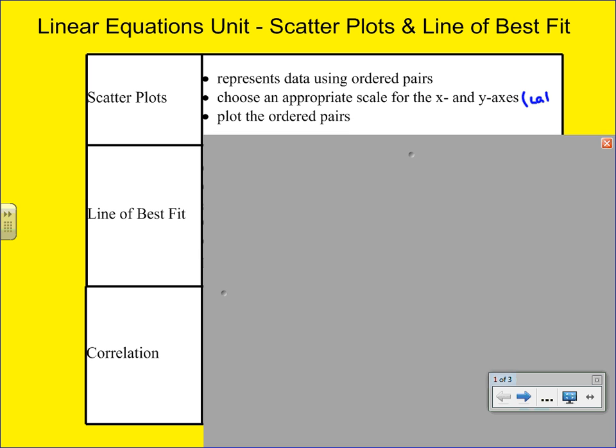And what you're going to notice is that you'll have ordered pairs all around the graph. They're not necessarily going to form a line or a curve, but they will just be scattered. And so we call that a scatter plot.